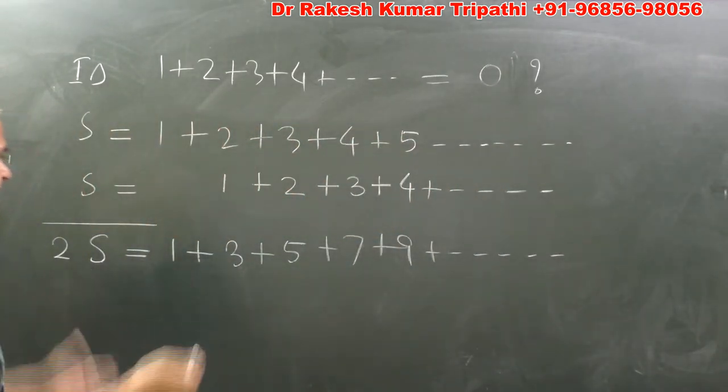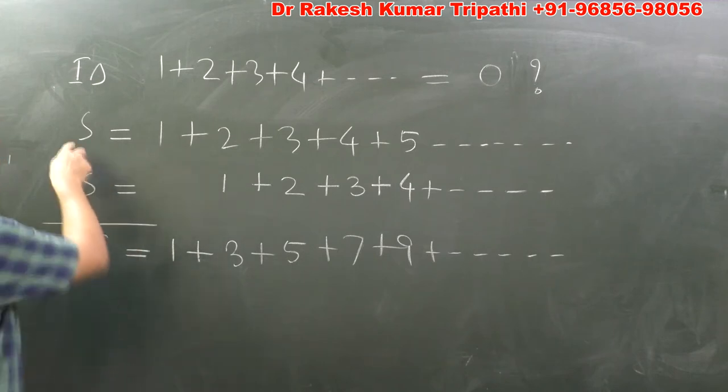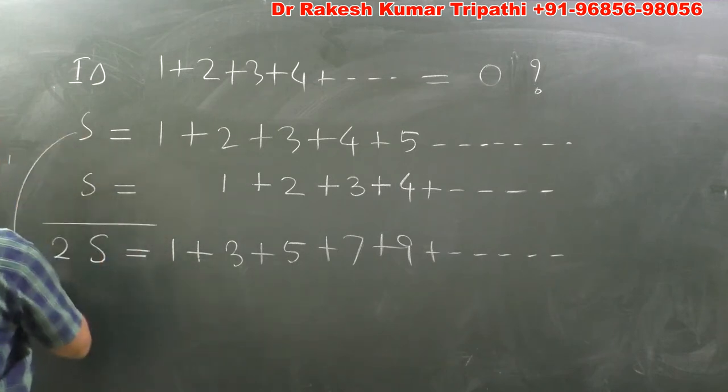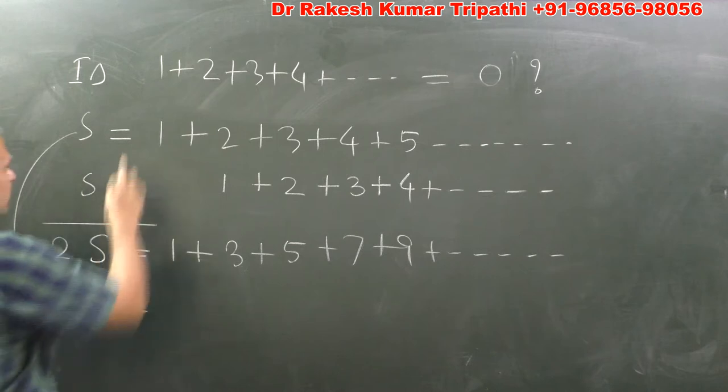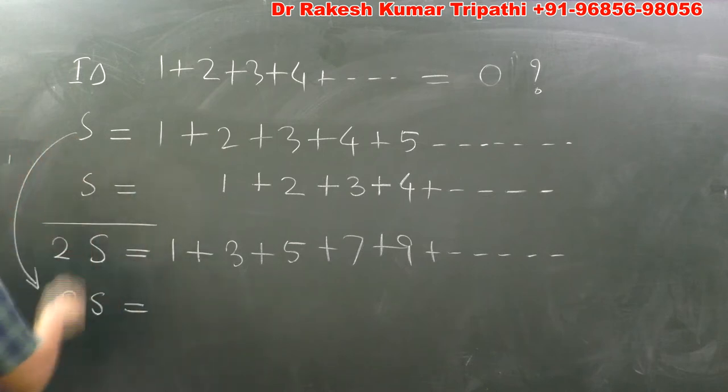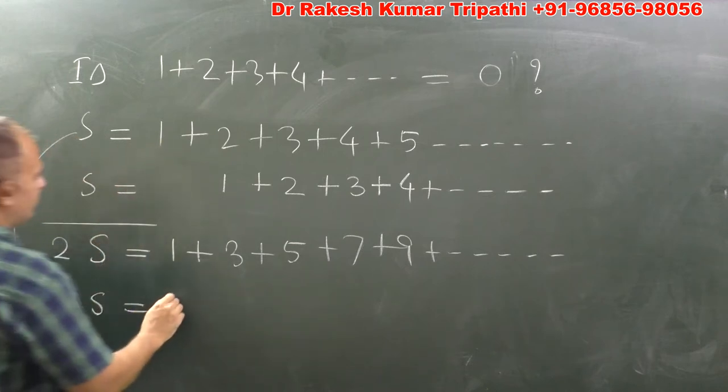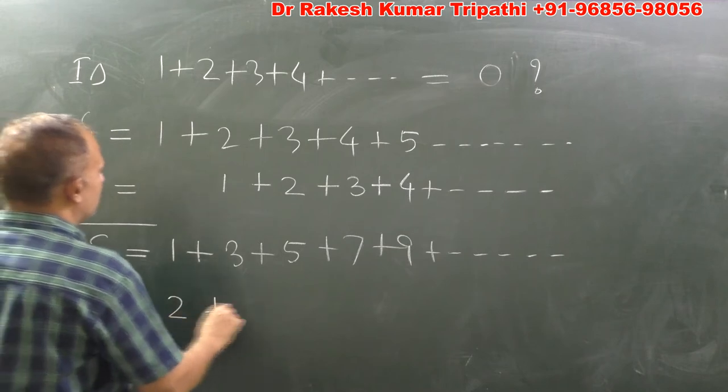Now this is S. On multiplying this series by 2 on both the sides, it becomes 2S on left side, and on right hand side we find 2 plus 4 plus 6 plus 8 plus 10 up to infinity.